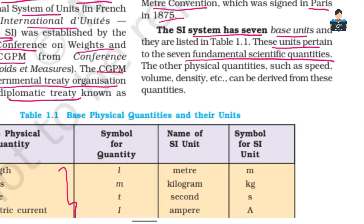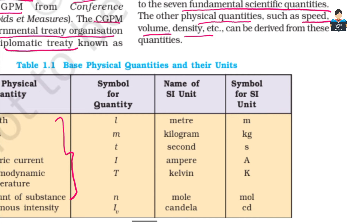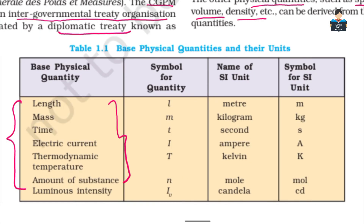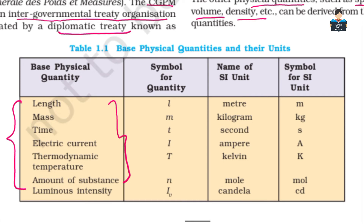Other physical quantities such as speed, volume, and density are derived units. These are derived from the base units — so length, mass, and time are base units, while speed, volume, and density are derived units.